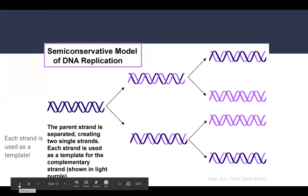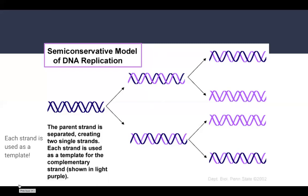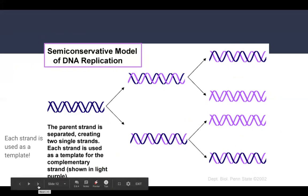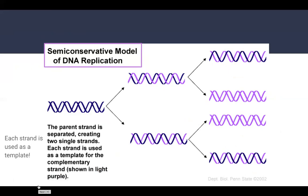DNA replication is a semi-conservative process, meaning that when DNA replicates, it uses one strand as a template to synthesize the new strand. Only half of your original DNA is conserved in that process. That picture illustrates it well. This is also a very popular multiple choice question — you might be asked which process emulates DNA replication: fully conservative, non-conservative, or semi-conservative.